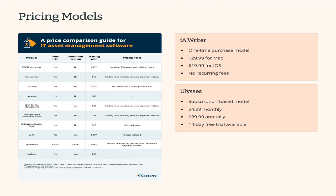IA Writer is a one-time purchase app, which can be appealing for those who dislike subscription models. It costs around $29.99 for Mac and $19.99 for iOS. Ulysses, however, operates on a subscription model and costs $4.99 per month or $39.99 per year. It offers a 14-day free trial, giving you a chance to test out its features before committing.